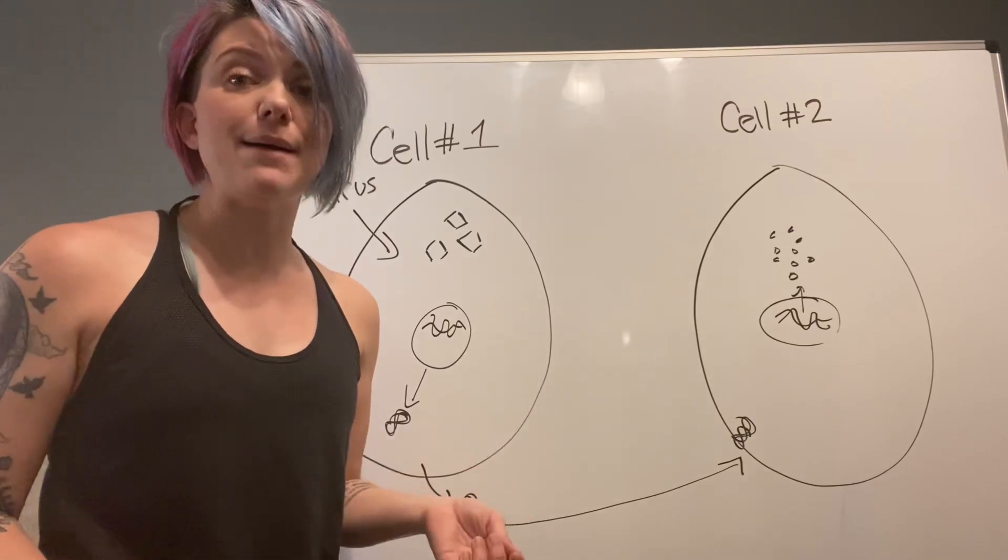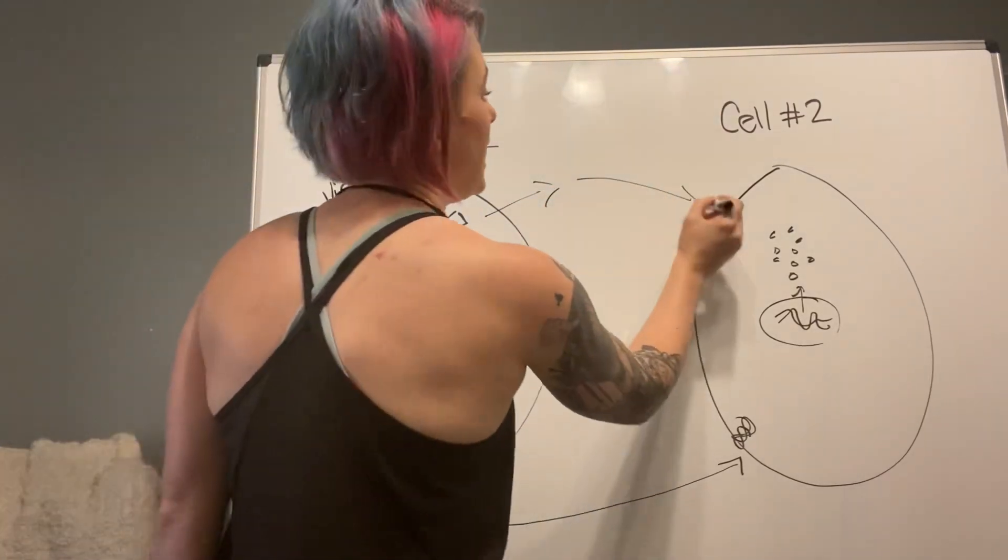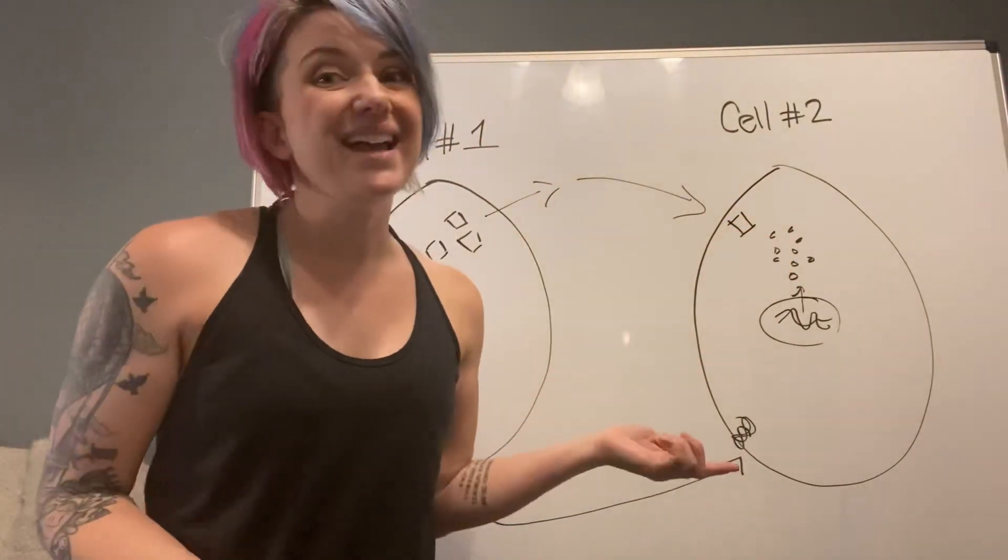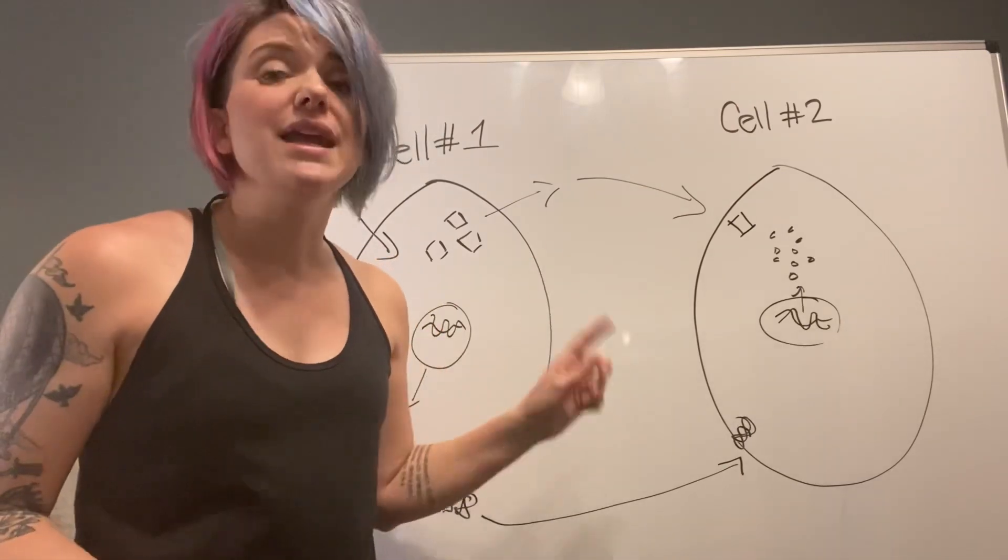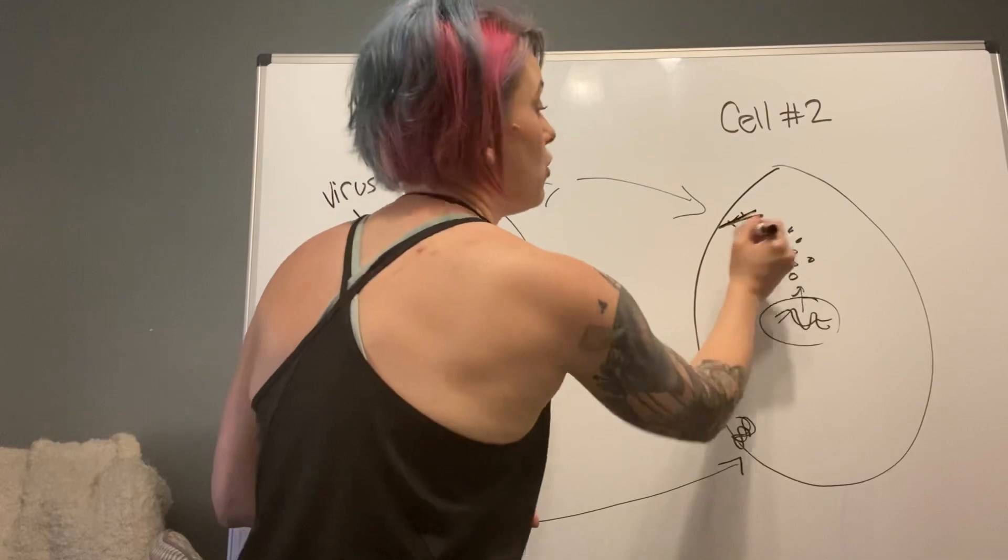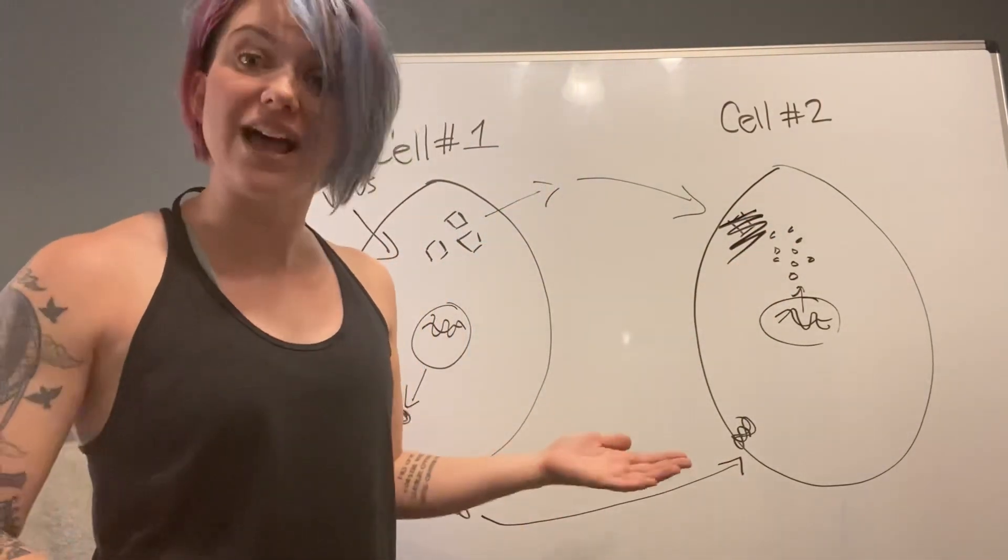Now the virus is done assembling in cell one and is released from the cell and goes and infects this guy. So he comes in the cell, but this cell was ready for him. He has antiviral proteins already made to destroy this virus and not allow it to infect cells any further.